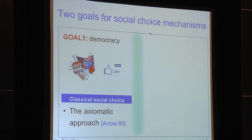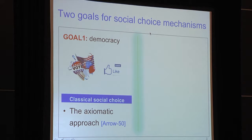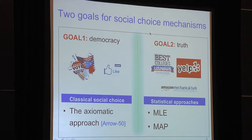Most previous work focused on one of two paradigms. The first aims to achieve democracy: agent preferences are assumed subjective, and the goal is to reach a compromise making as many people happy as possible. This is the classic social choice approach, whose golden standard is the axiomatic approach proposed by Nobel Prize winner Kenneth Arrow. Economists proposed normative properties — like anonymity (all agents treated equally), neutrality (all alternatives treated equally), strategy-proofness, and monotonicity — to evaluate mechanisms.